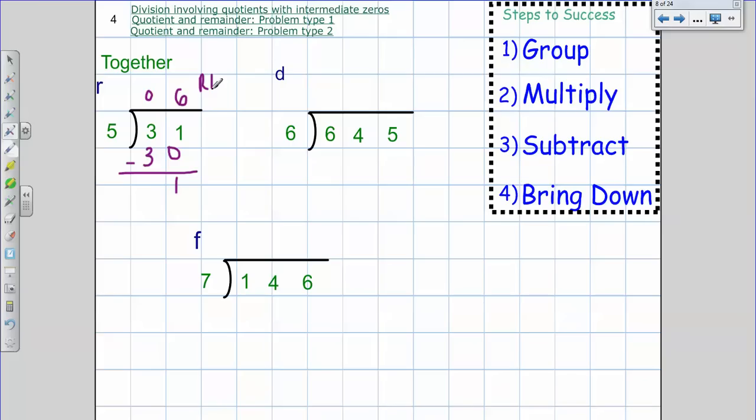Okay, now we're going to see what we can do instead of saying remainder. So let's just continue doing that on this problem. Let's say instead of having a remainder, I want to know what is that going to look like as a decimal. So as a decimal, I'm going to add a decimal point and add a 0. What do you think I'm going to need to do with this decimal point? You got it.